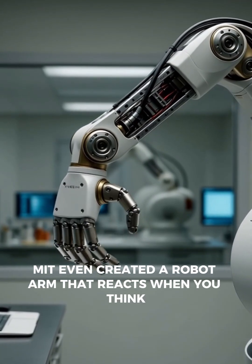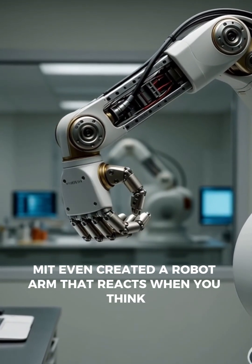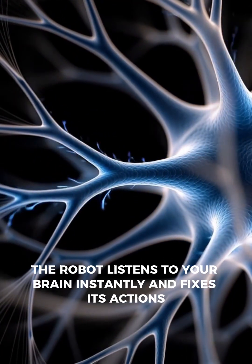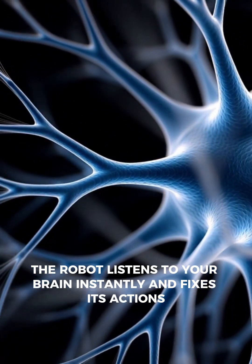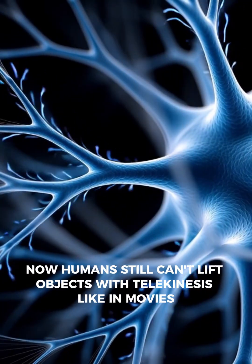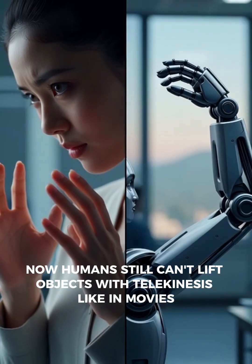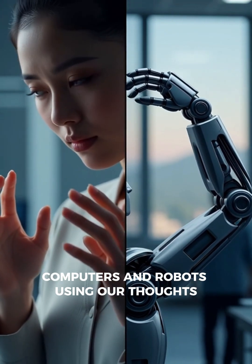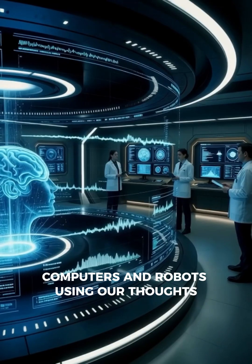MIT even created a robot arm that reacts when you think correct or wrong. The robot listens to your brain instantly and fixes its actions. Now humans still can't lift objects with telekinesis like in movies, but we can control machines, computers, and robots using our thoughts.